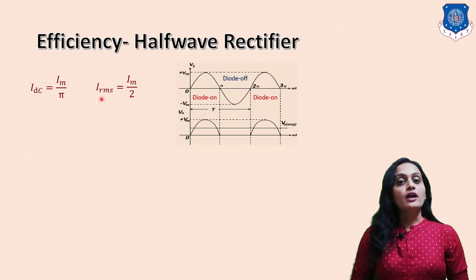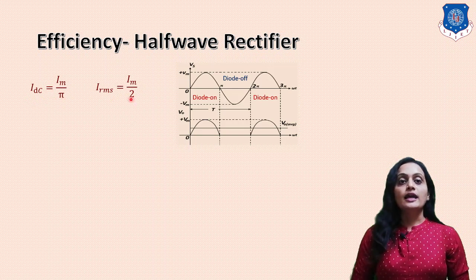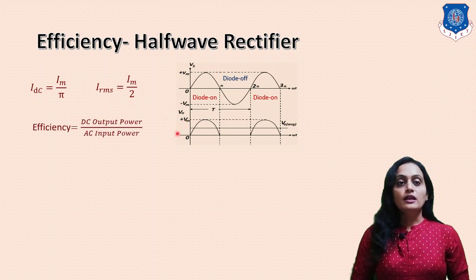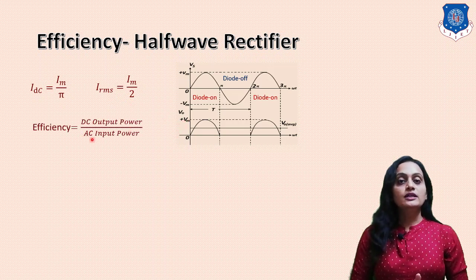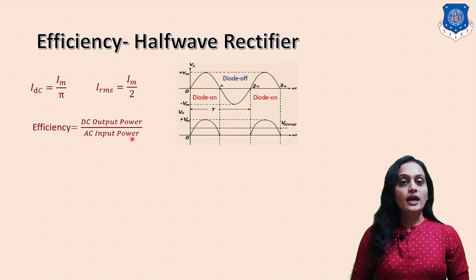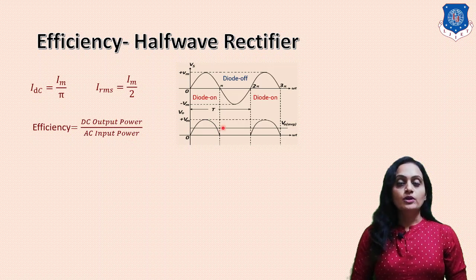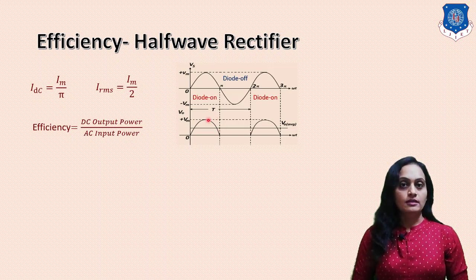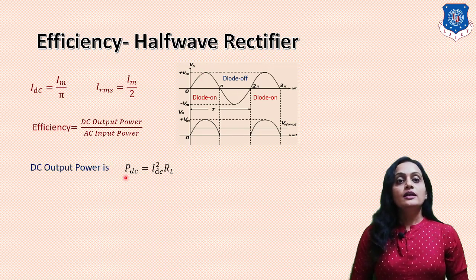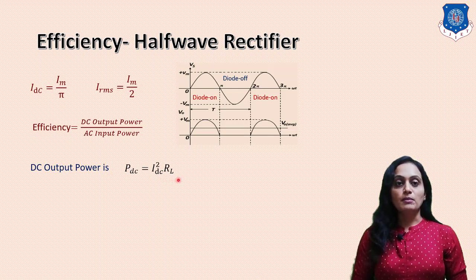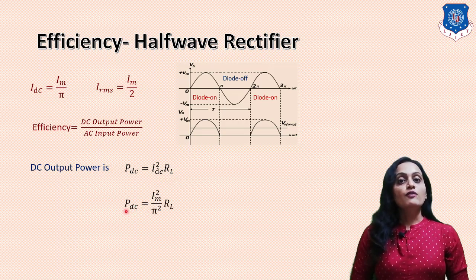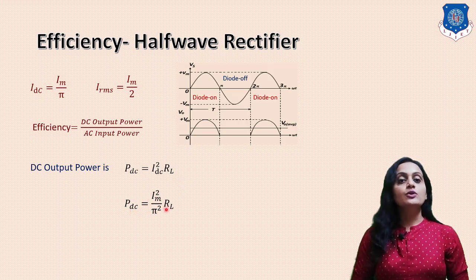IDC for the half wave rectifier is IM by π and IRMS is IM by 2. Efficiency equals DC output power divided by AC input power, because at the output we get the DC signal and at the input we apply the AC signal. DC output power is given by PDC = IDC² × RL. Putting the value of IDC, we get PDC = IM² divided by π² × RL.